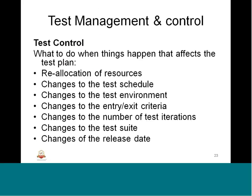Test management and control addresses what to do when things happen that affect the test plan. If there is an impact on the test plan, we need to reallocate resources, change the schedule, change the environment, redefine entry and exit criteria, adjust the number of iterations, address suite-related changes, and update the release date accordingly. This was covered in session 3.